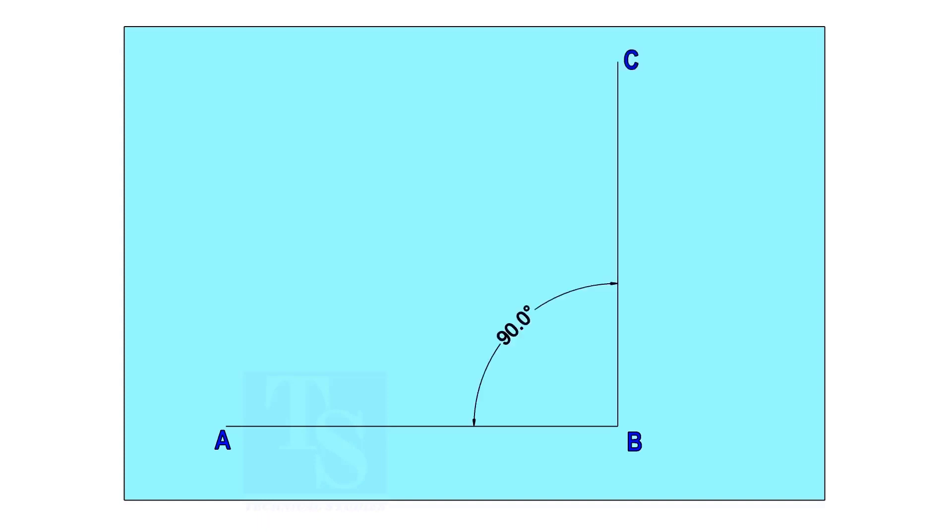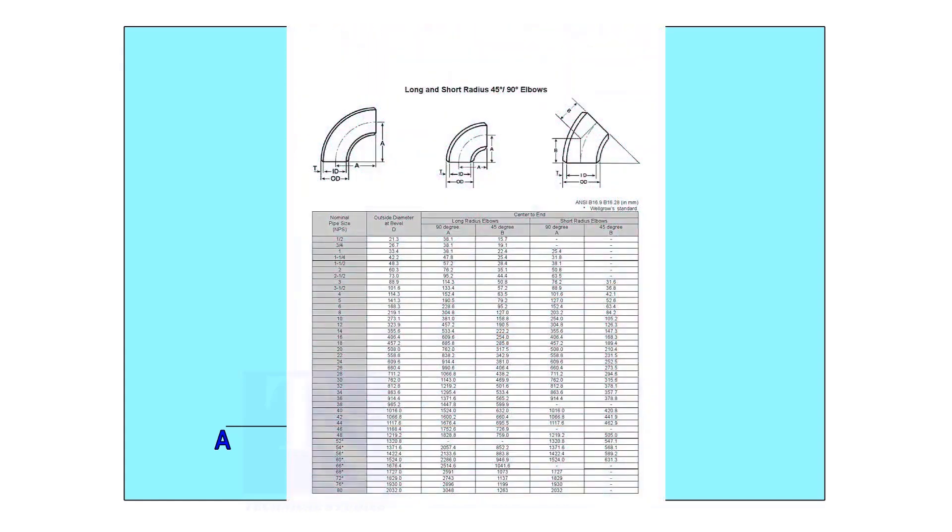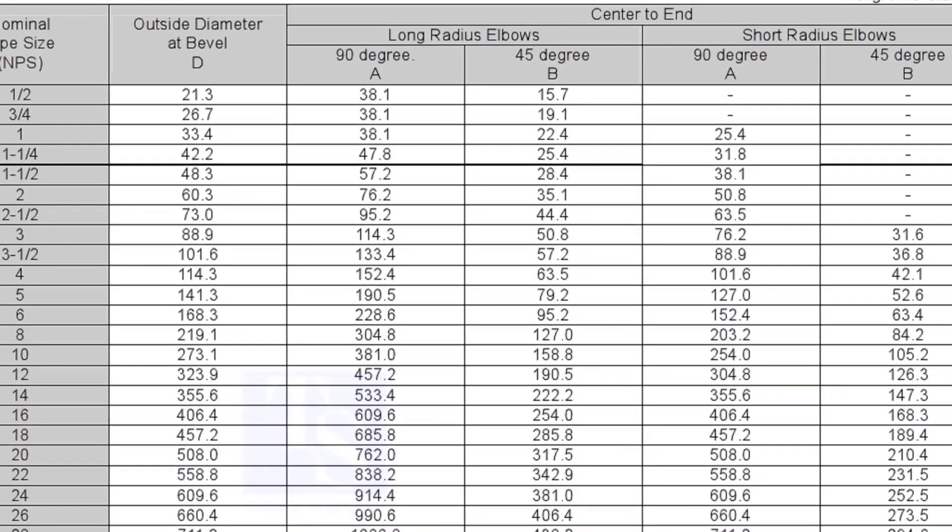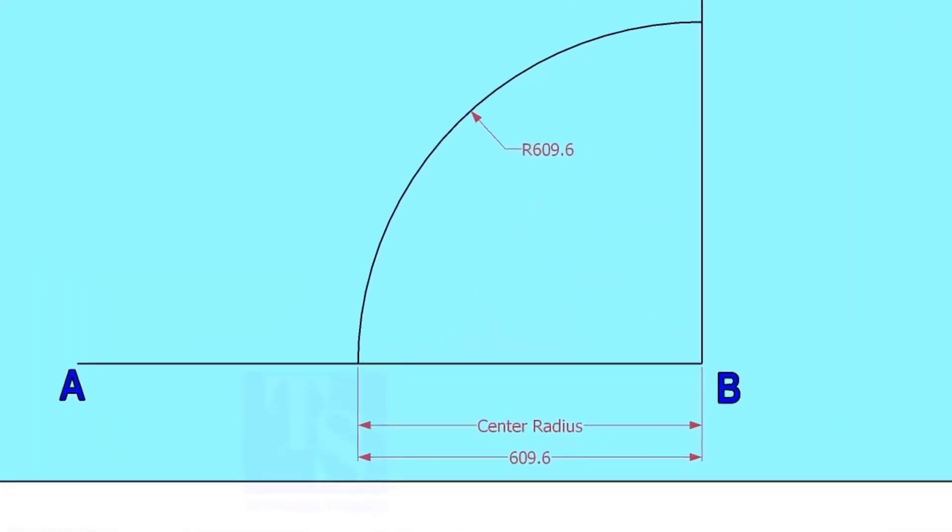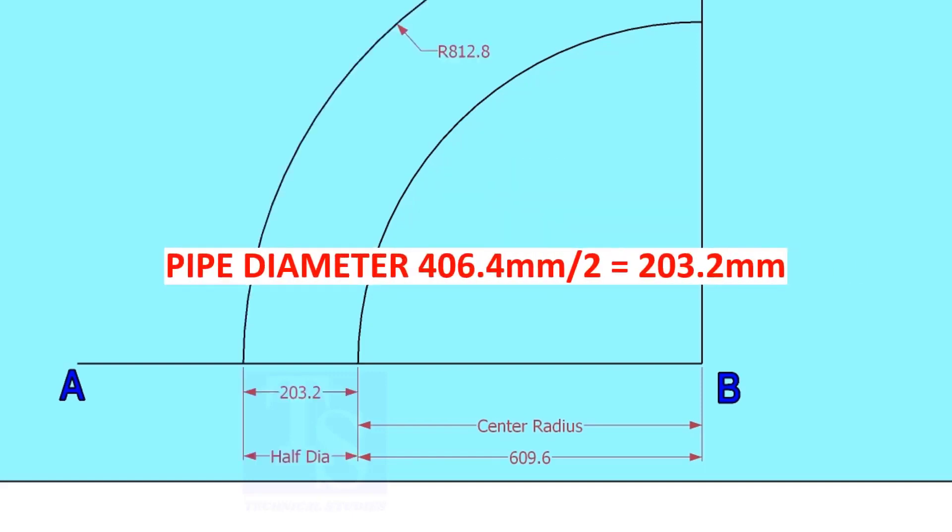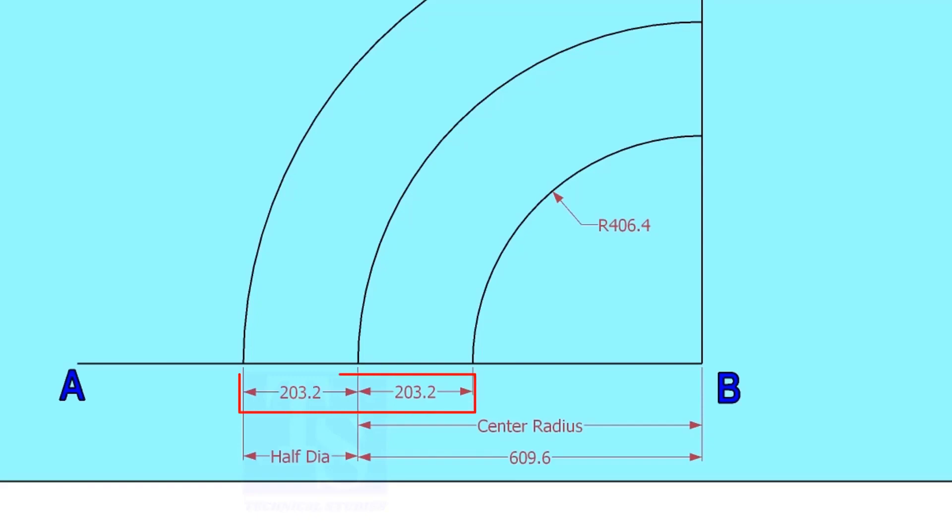Mark line AB and a perpendicular line BC. Let us check the center radius of 16-inch long radius elbow. Draw an arc with the center radius 609.6 millimeters. Mark the half OD arcs on both sides of the center line.